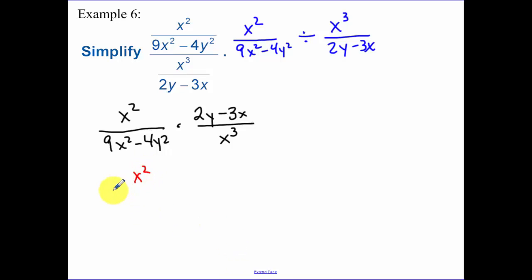There's nothing to factor with the x squared. This bottom is a difference of two squares. The first term is a perfect square, the second term is a perfect square. And make sure you factor it correctly. It's 3x plus 2y, 3x minus 2y times by x to the third, 2y minus 3x.